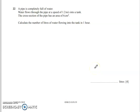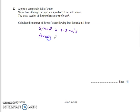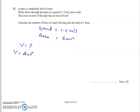Question number 22: a pipe is completely full of water. Water flows through the pipe at a speed of 1.2 meters per second. The cross-section area is also given: area equals 6 centimeters squared. The question asks how much liter of water — that means volume. Volume equals area of cross-section multiplied by length of pipe. We can use this formula, but there is a difference of units in this scenario.